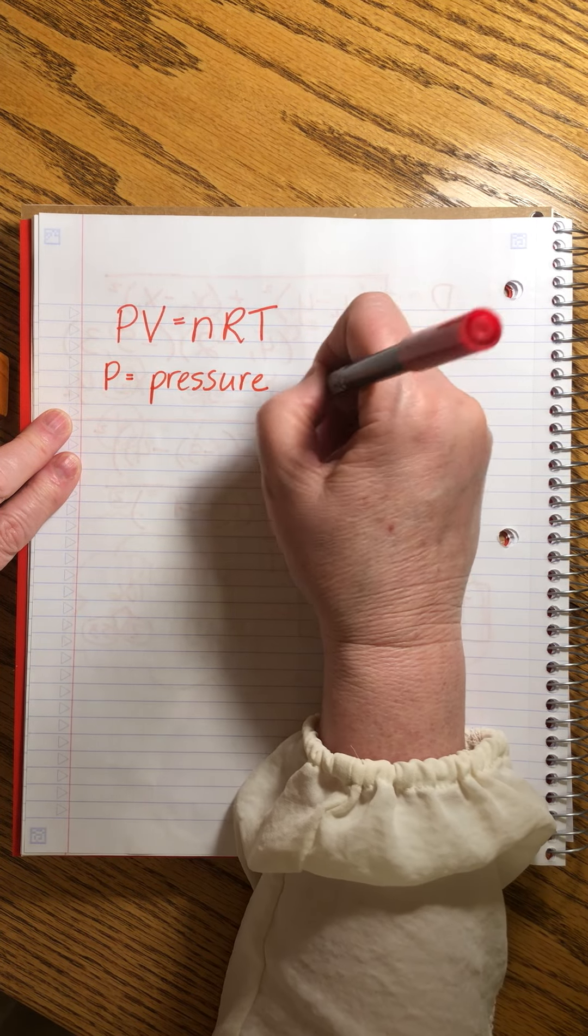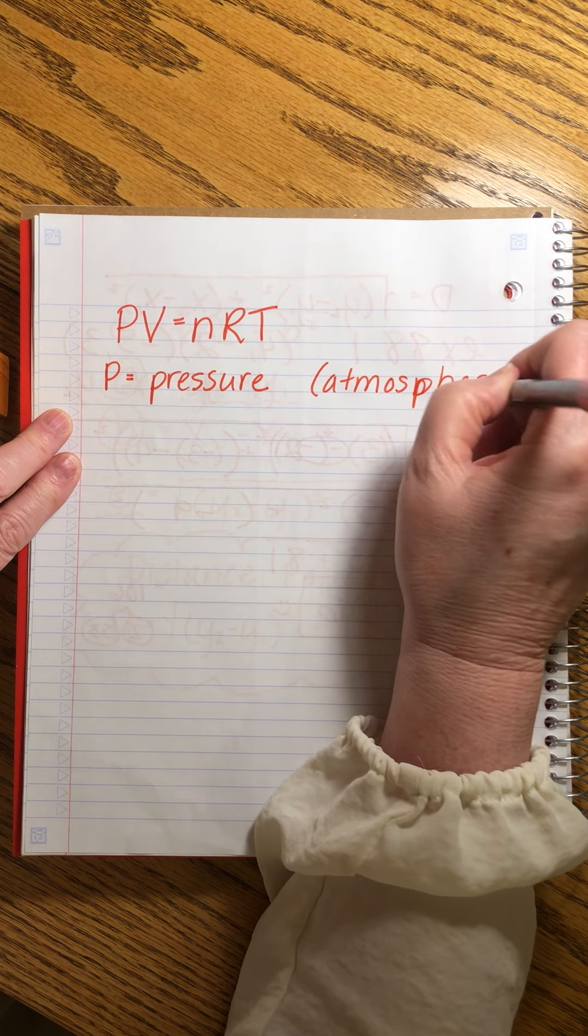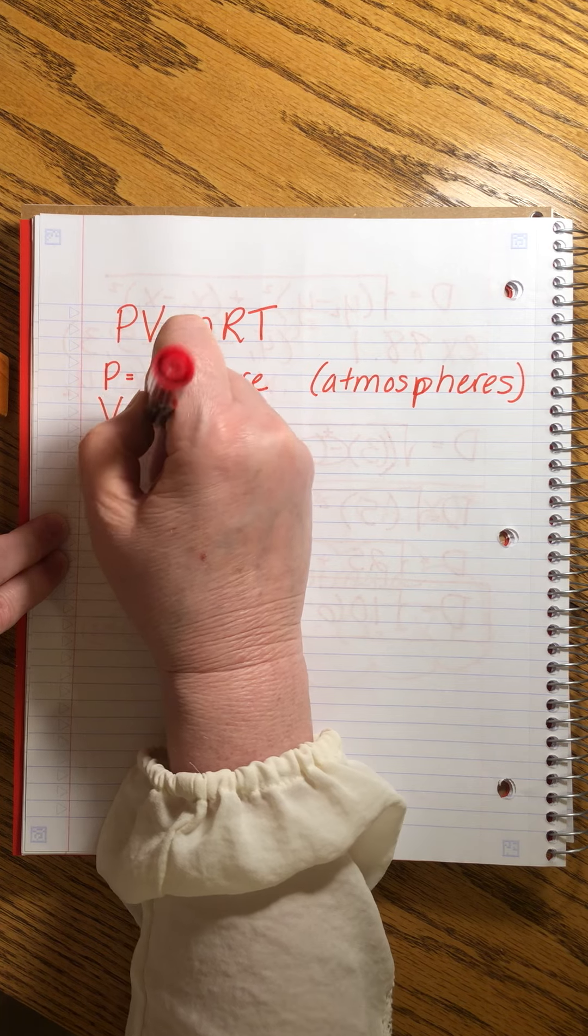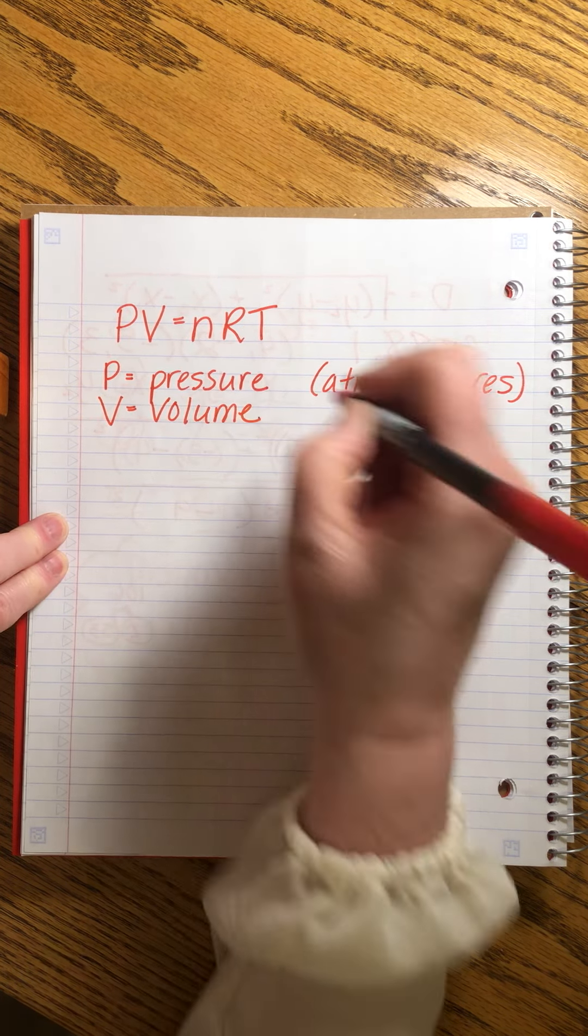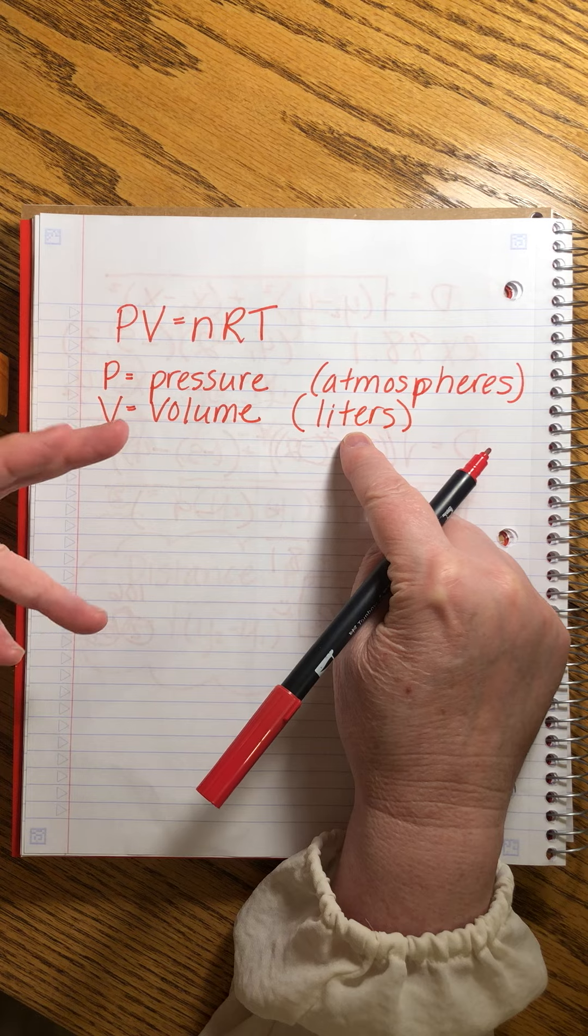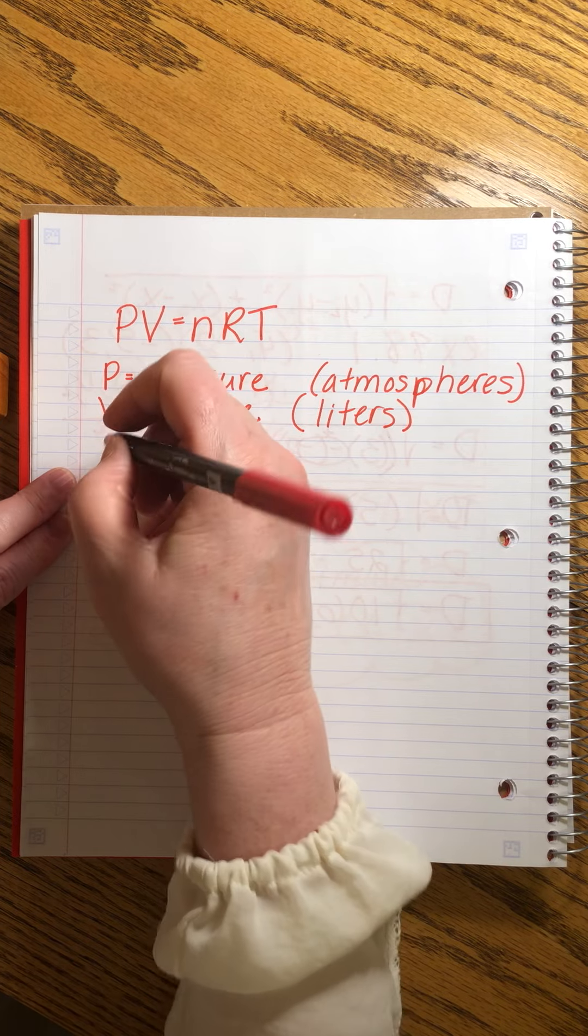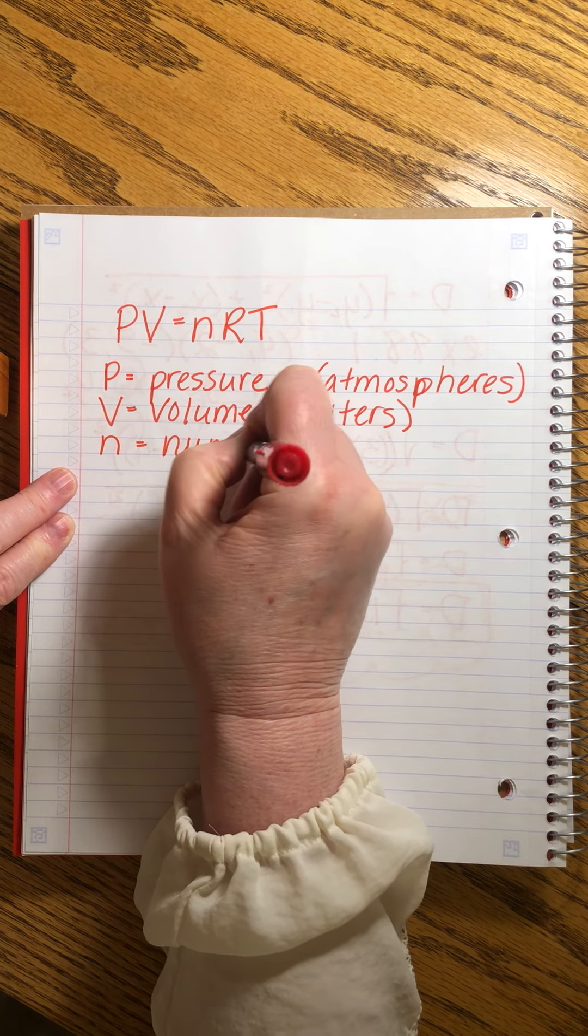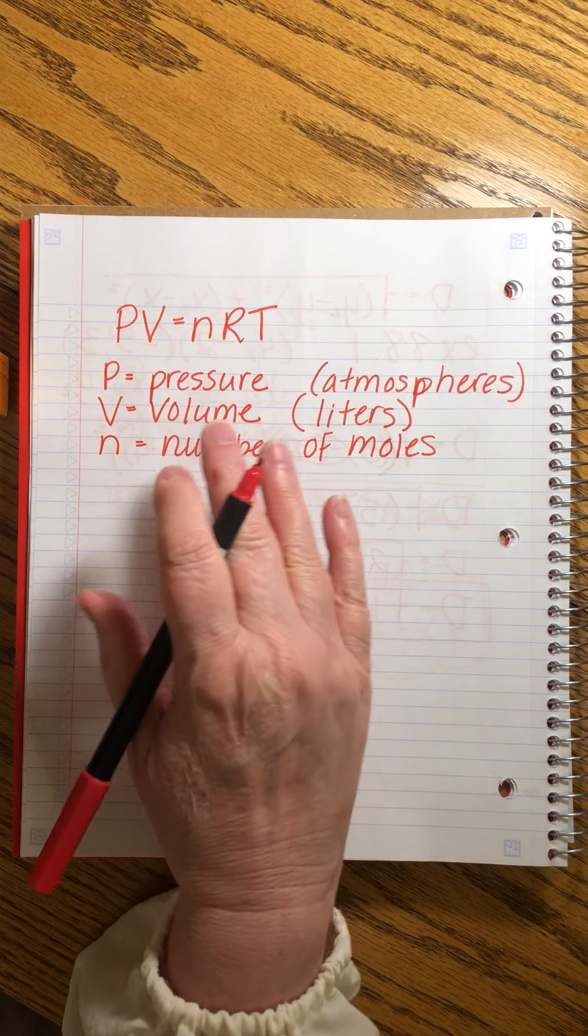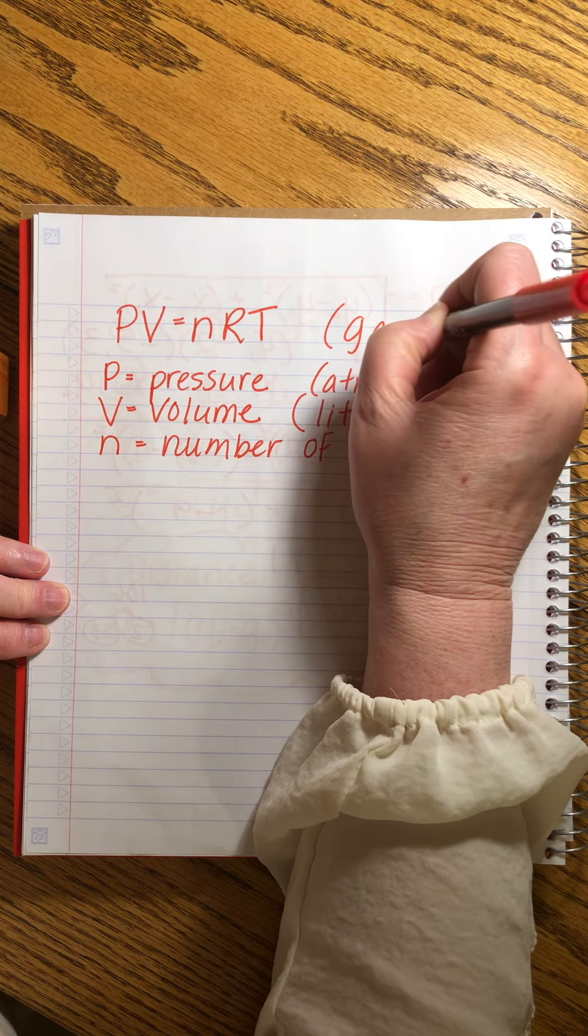P equals pressure. And the typical unit for that is something called atmospheres. So whenever you see atmospheres, you know, oh, that number is a pressure. It goes into the P spot. V equals volume. And that is usually measured in liters. So again, if you see a number 56 liters, you know, oh, okay, that's the volume. N equals the number of moles in a gas. I believe this is all about gas. This PV nRT is about gases. Okay. You know, solid, liquid, gas.